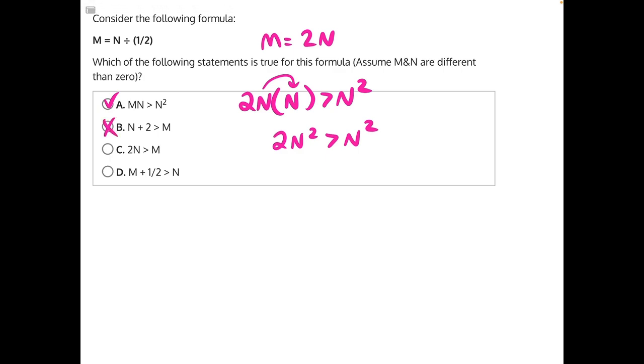For answer choice C, we have 2N is greater than M, which is equal to 2N. These are equivalent, not greater than or less than. So, that makes answer choice C also incorrect.